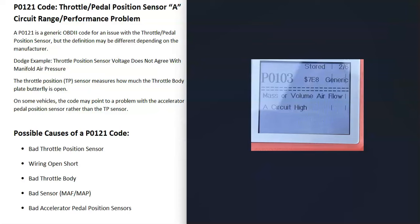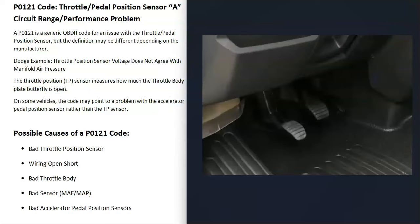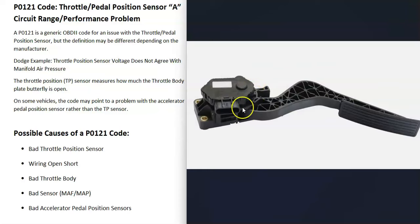The last thing on the list is going to be a bad accelerator pedal position sensor. This isn't going to apply to all vehicles — it really varies depending on the vehicle, the year, and the manufacturer. But some vehicles have a sensor located on the gas pedal, and if it goes bad it can also cause a P0-121 code.